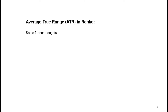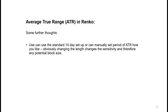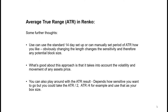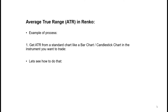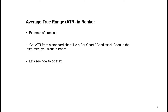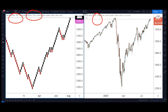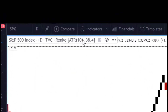Some further thoughts: ATR works well for a more automated or systematic approach. The period of ATR used affects block size — if recent history is more volatile or flat, you could get the wrong size box. You need a consistent approach that looks at volatility over the longer term. Play around with ATR divided by two or whatever suits you, but apply it consistently. To show you how I come up with the ATR number: I like to look at a traditional candlestick chart of the instrument I want to trade. Here we've got the S&P 500 — candlestick chart on the right, Renko chart on the left, both one-day period — with ATR set to 10 giving a 38.4-dollar brick size.